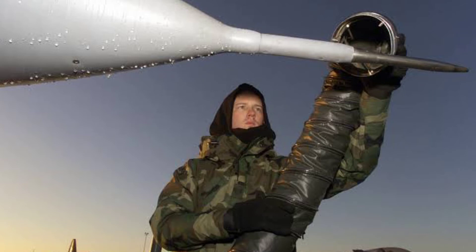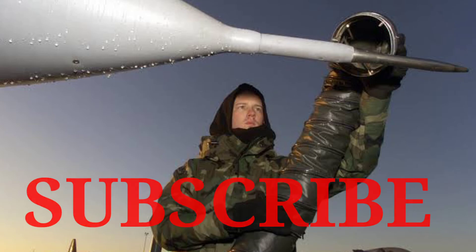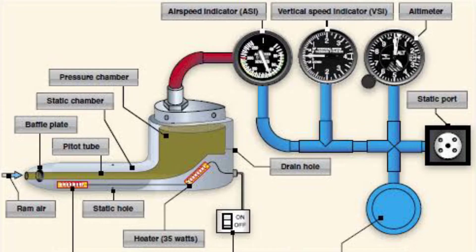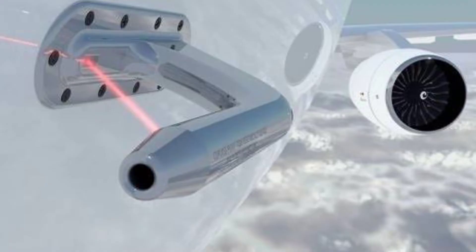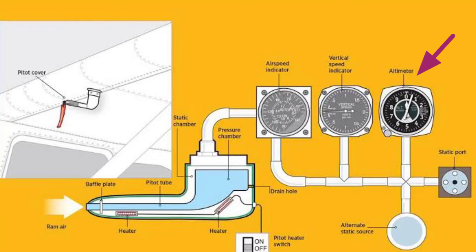Before starting, if you are new on my YouTube channel, please subscribe and be a part of Aviation Jagat. The Pitot Static System gives indication by measuring air pressure. Gathering and distributing various air pressures for flight instrumentation is the function of the Pitot Static System, and it collects ram air and static pressure for use by the flight instruments.